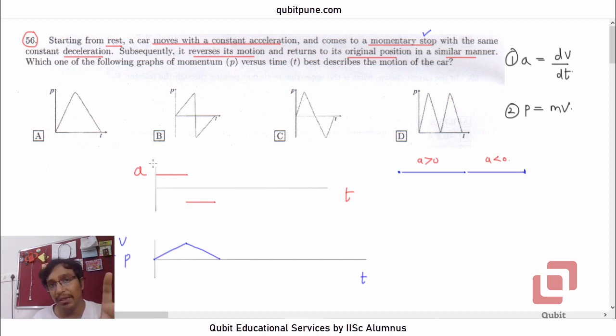This basically rules out options A and D, because this is our positive velocity, this is the positive direction. This is where velocity is positive. So clearly, when it reverses, the velocity has to be negative, so momentum will also be negative. So A and D are ruled out.